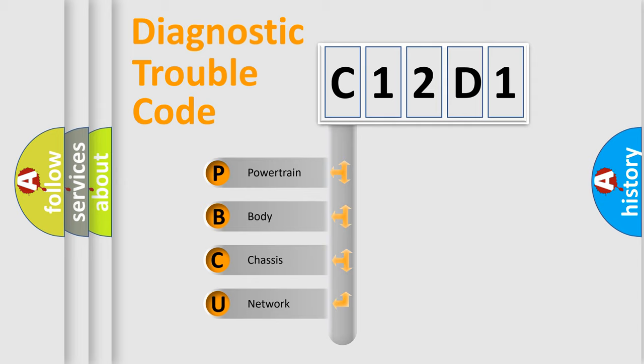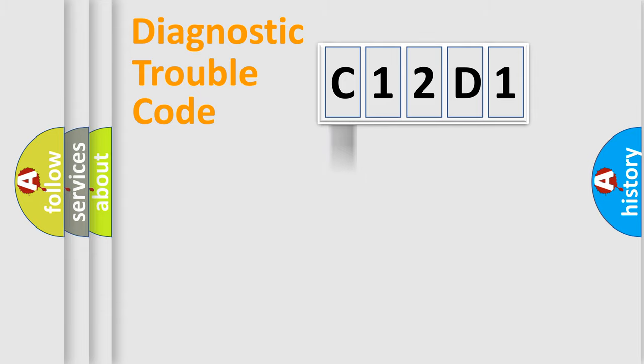We divide the electric system of an automobile into four basic units: Powertrain, Body, Chassis, and Network.